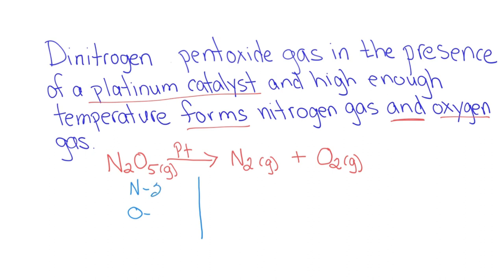I have 2 nitrogen and 5 oxygen. On the product side, I'm going to have the same two atoms. I have 2 nitrogen and 2 oxygen. So the nitrogen is balanced, but my oxygen is not.